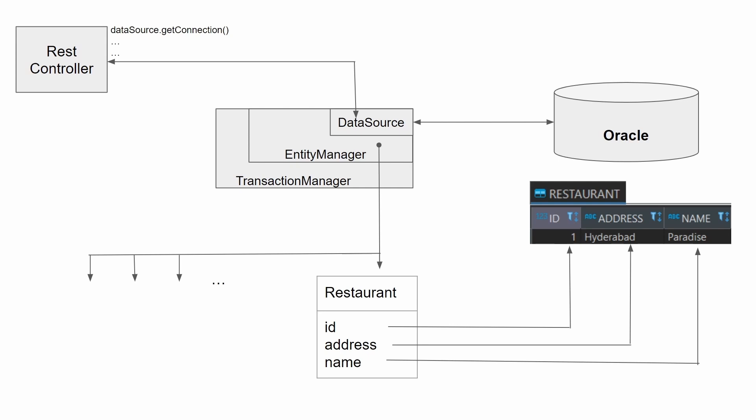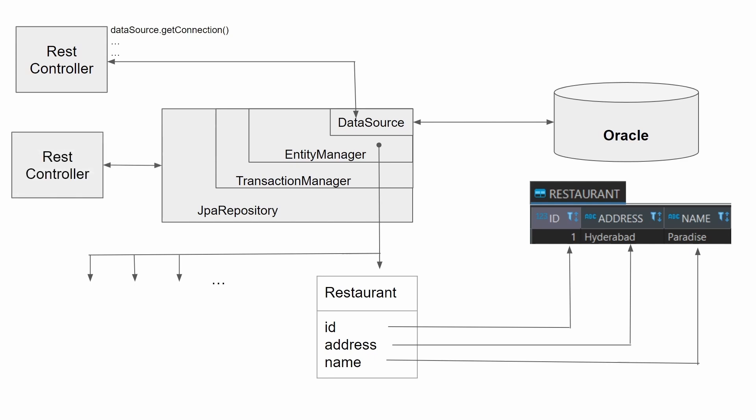We need a layer for transaction management — that's where the TransactionManager bean comes in, providing transaction management on the EntityManager. The Spring Data JPA repository has access to this transaction management along with the EntityManager. The JPA repository focuses on one specific entity and performs CRUD operations on it. The REST controller then just uses the JPA repository object, calling methods like save or findAll directly.